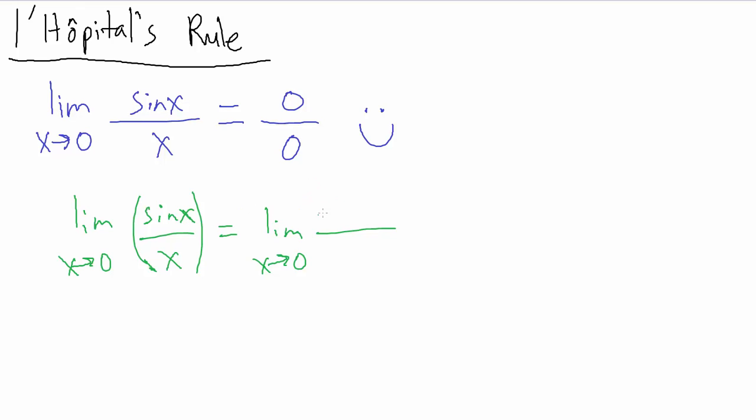So if we take the derivative of the top just by itself, well, the top is sine of x, okay, and the derivative of sine of x is just cosine of x, right? So on the top, we just have cosine of x.